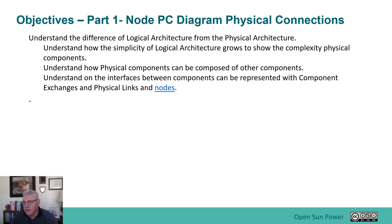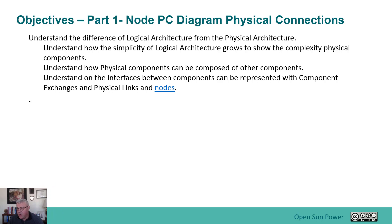I'm going to go through this in three parts and talk about each part separately, all in this one video. Part one is the node PC diagram, or the physical connections. We'll walk through what that looks like and how it differs from the logical architecture, understand how the simplicity of the logical architecture grows to show the complexity of the physical components, and how physical components can be composed of other components. The interfaces between components can be represented with component exchanges of physical links and nodes.